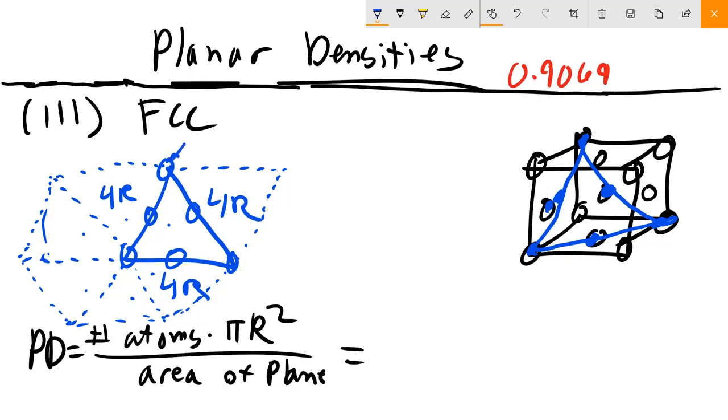So each of these are one-sixth contribution, but we can see here that these will contribute a half. So we end up, in total, with a total number of atoms. So one-half, one-half, one-half. So one-and-a-half plus a half will give us two atoms times pi R squared.